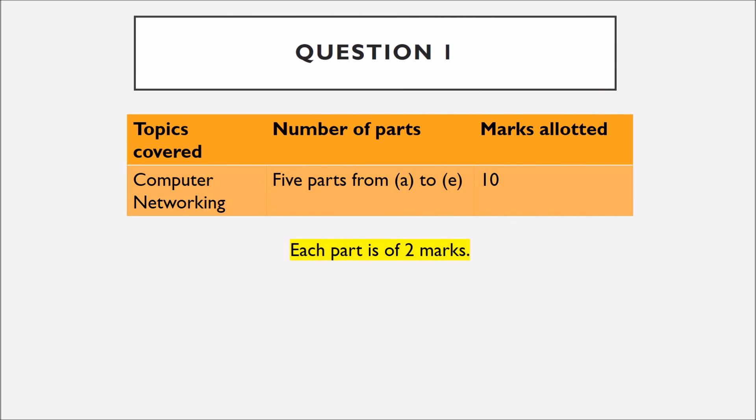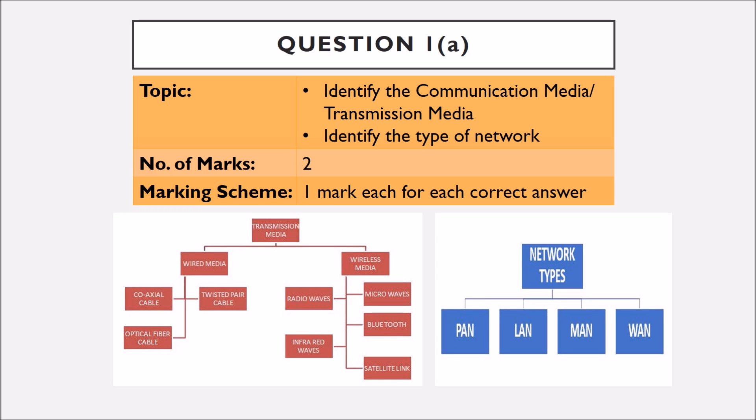Now let's discuss in detail what all is there in question one. All the five parts from A to E in question number one are of two marks each. Question number one part A is based on identifying communication media and transmission media. Please learn different types of wired and wireless medias. The second part of this question is based on identifying the type of networks that is PAN, LAN, MAN or WAN. One mark is given for each correct answer.